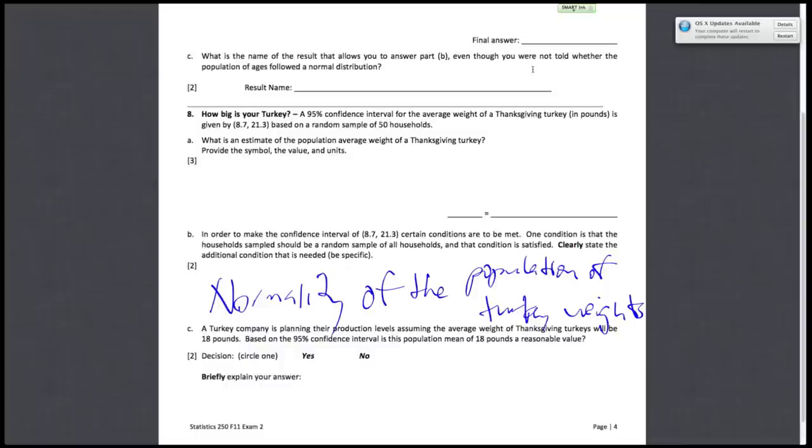And lastly, 8C. A turkey company is planning their production levels assuming the average weight of Thanksgiving turkeys will be 18 pounds. Based on the 95% confidence interval, is this population mean of 18 pounds a reasonable value? Refer back to the confidence interval they give you, 8.7 and 21.3. Well, if the average weight that they give you in this question is 18 pounds, that will be within the confidence interval. We can draw a little number line, and 18 will be somewhere around here. If they give you a value that is within this confidence interval, then we can safely assume that this value, 18 pounds, would be a reasonable value for the population mean. So for 8C, our answer would just be yes.